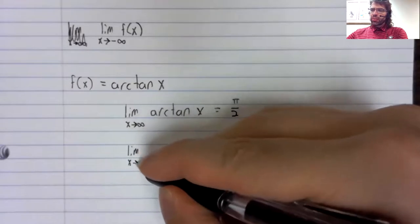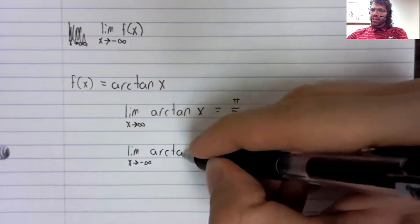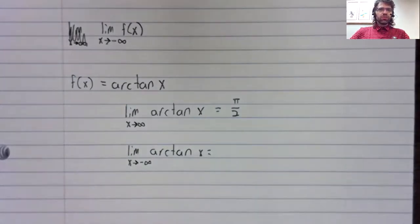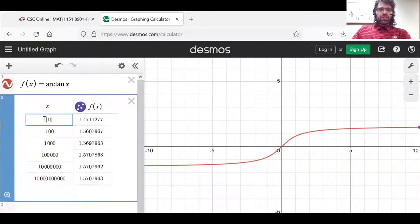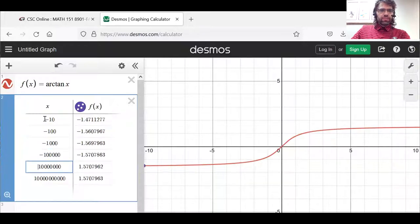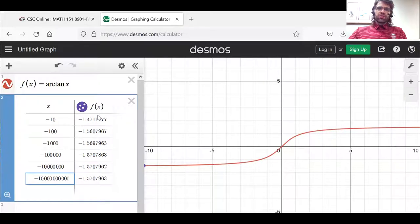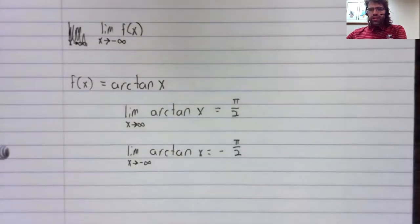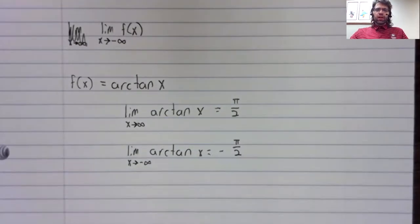As for the limit as x approaches negative infinity, let's investigate this on decimals. Once again, we'll make all of these x's negative. And this function now appears as x approaches negative infinity to be approaching negative 1.57 something. Again, I can be a little more specific than that. As x approaches negative infinity, the arc tangent approaches negative π over 2.